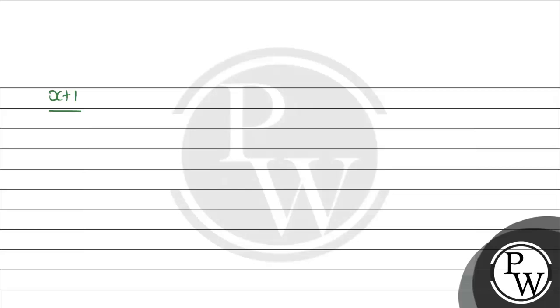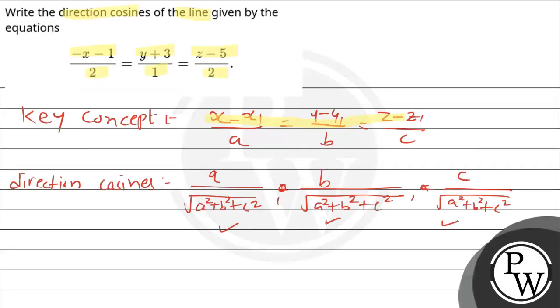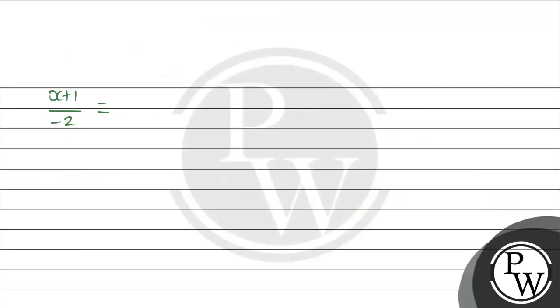Everything else is correct. Y plus 3 is right, divided by 1. This equals z minus 5 divided by 2. Now check, this is our required Cartesian form.